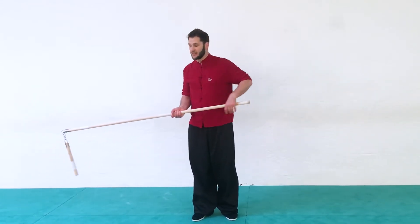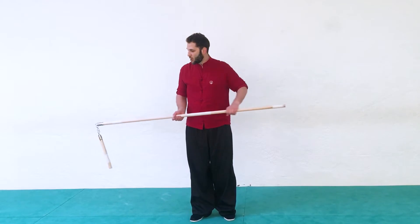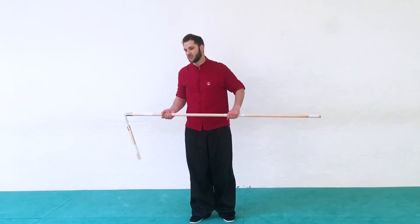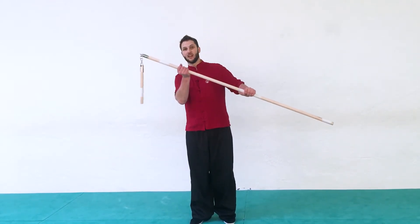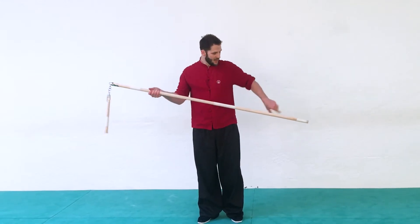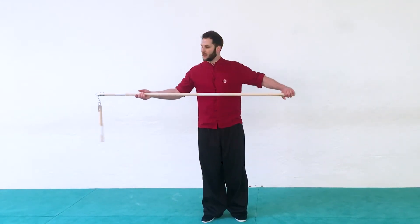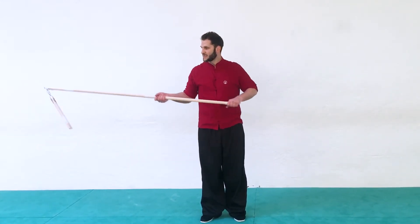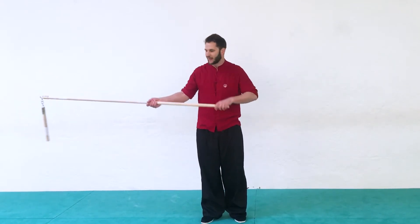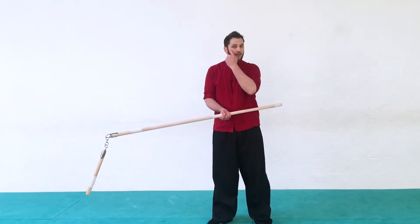This is a long weapon, so you have to make sure you use it as a long weapon to have reach. Do not try to choke up on the staff, because now it just becomes an awkwardly long nunchuck, and this is going to be a bit of a hindrance behind you. You want to make sure that you have more staff in front of you than behind.